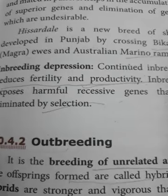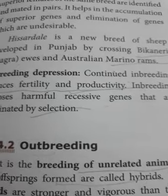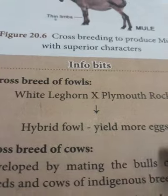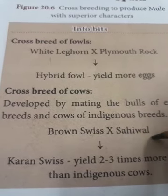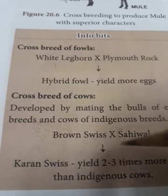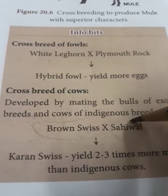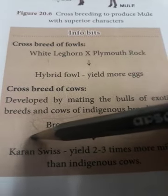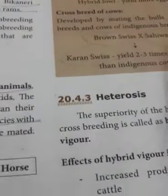More examples of outbreeding: crossbreeding White Leghorn and Plymouth Rock fowls produced a hybrid fowl that yielded more eggs. Another example — Brown Swiss (an exotic species) crossed with Sahiwal (an indigenous Indian cattle breed) produced Curran Swiss, which yielded two to three times more milk than the Sahiwal. These are the advantages of outbreeding — to get more and more products.